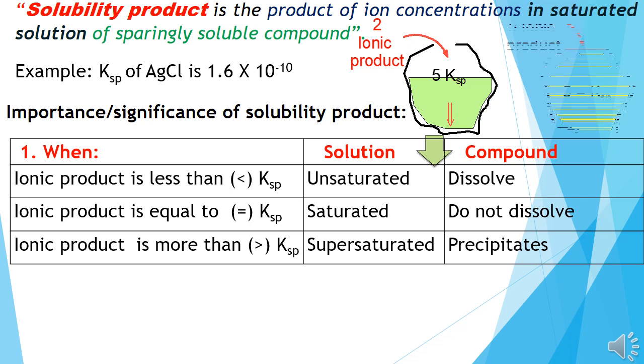If we talk about another condition, when the Ksp is 5 and the ionic product from compound added equals 5, then the capacity is full. The solution is saturated, and the compound will not dissolve further.